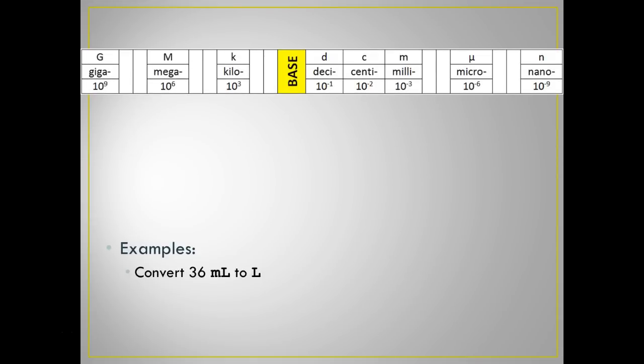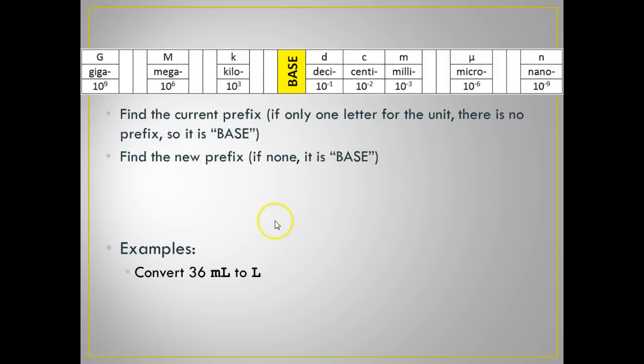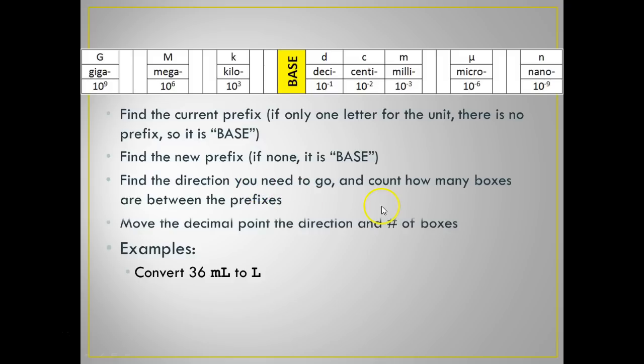All right, here's how we convert. Now, you don't need to write this down. Just try some of these examples here. We're going to convert 36 milliliters to liters. The way you do it is you find the current prefix. In this case, it's milli. Now, I find the new prefix. In this case, there is no new prefix. So, if there is none, it's base. So, what I'm really going from is milli to base. Find the direction you need to go and count how many boxes and move that. So, let's take a look. I'm going from milli to base. So, I start with milli, and I go one, two, three to the left.